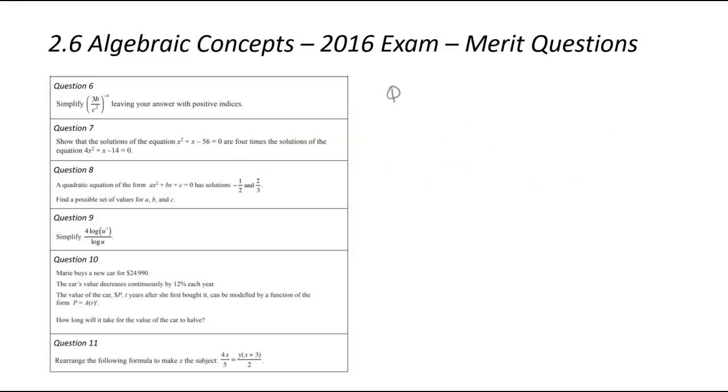We are now looking at question number 10. Marie buys a new car for $24,990. The car decreases, key thing is decreases at 12% each year. We've been given an exponential equation to model the price. When will the car half in value? We'll start by jotting down that model: p equals a times r to the power of t. Just to remind us, p stands for the current value, a stands for the original value, r is the rate of change, and t is time in years.